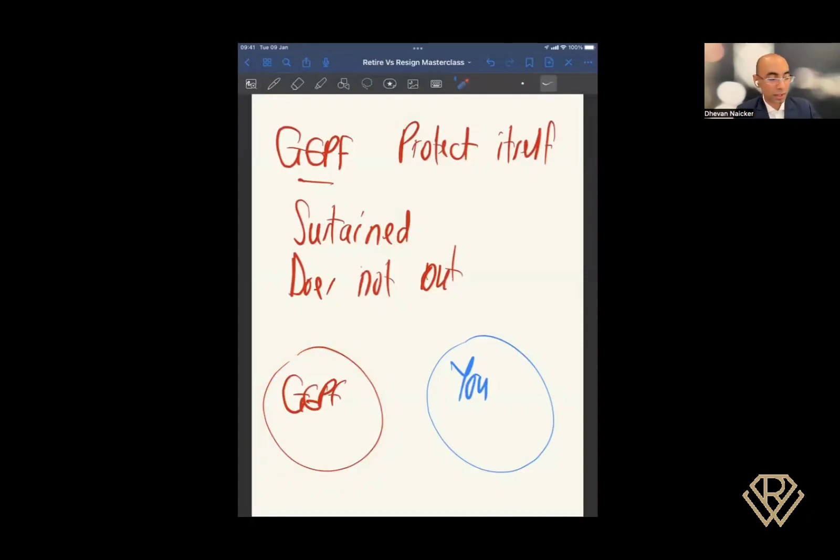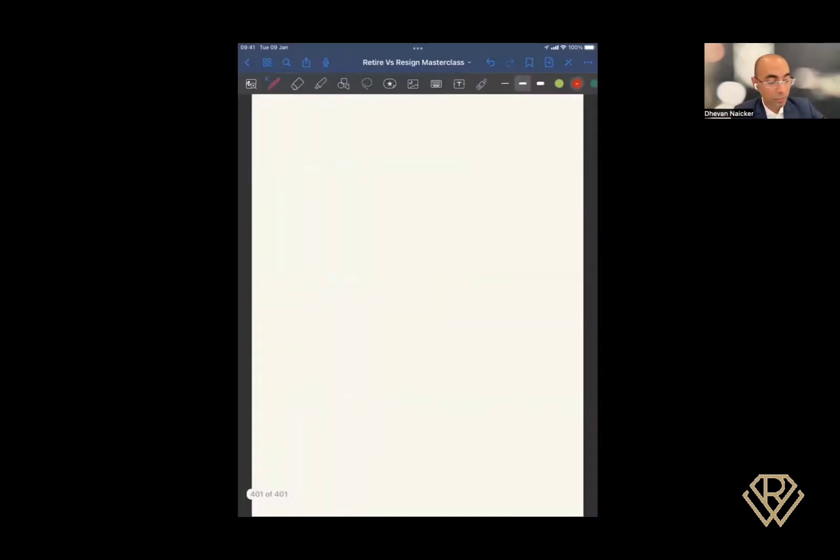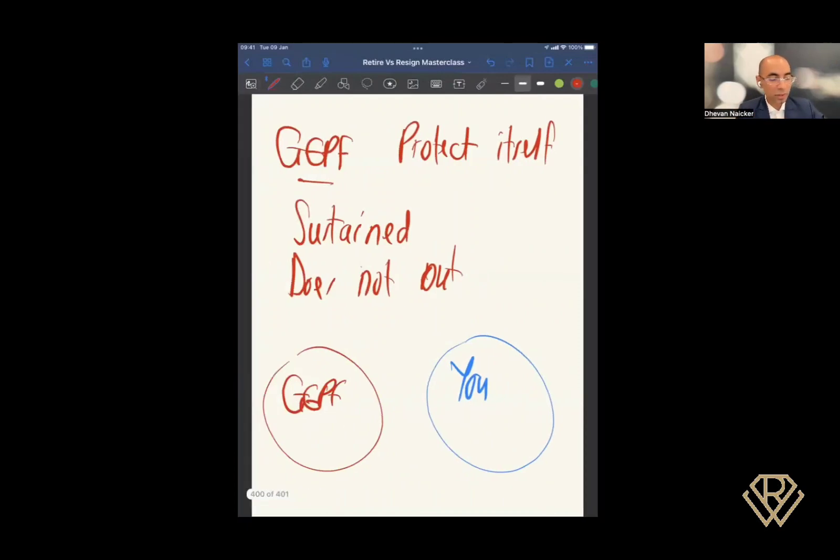Because, again, they want to make sure that the fund is sustainable and it does not run out. Now, it doesn't bode well, I understand you, from an investment perspective. Because if GEPF is investing the money and you see that the money is constantly reducing, because of allegations around where the money is invested, why is it taking so long for GEPF to turn things around, if they know it's a bad investment, a lot of concerns around fraud. Now, if you have all those things inside there, naturally, that could eventually result in more formula changes.